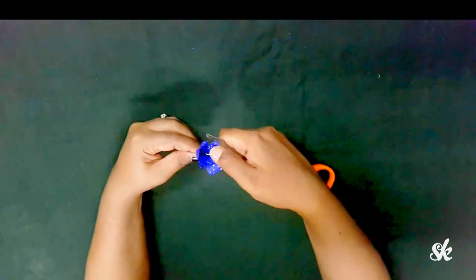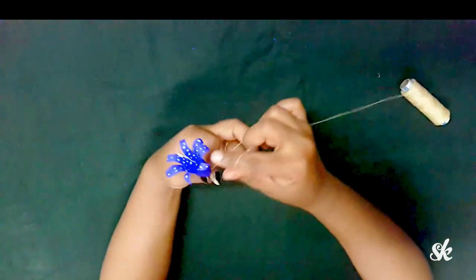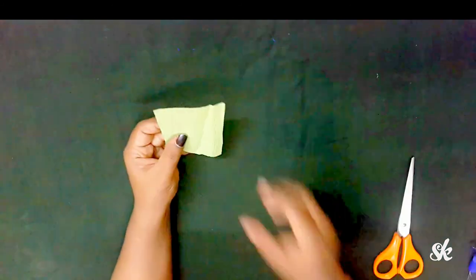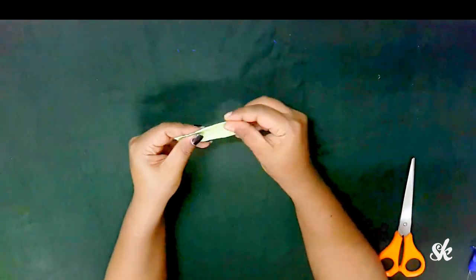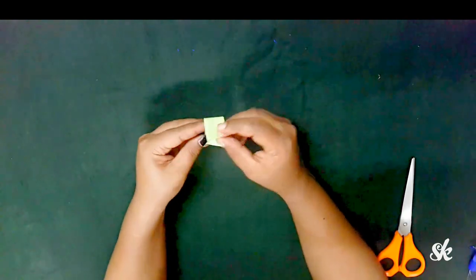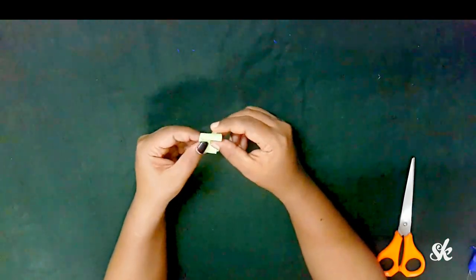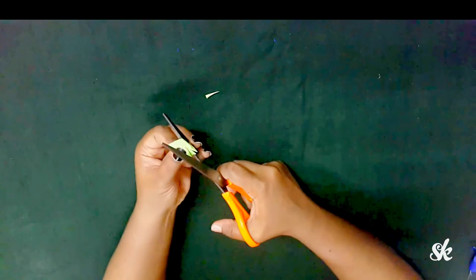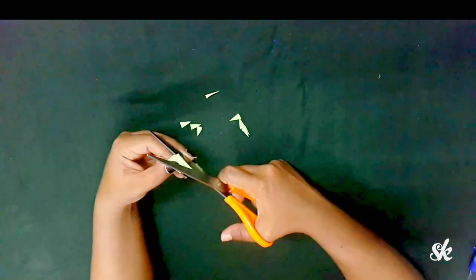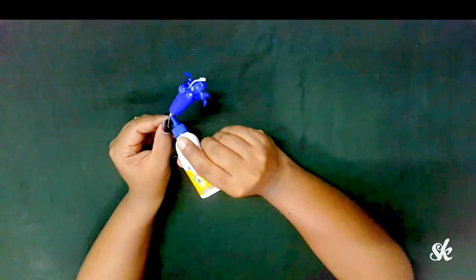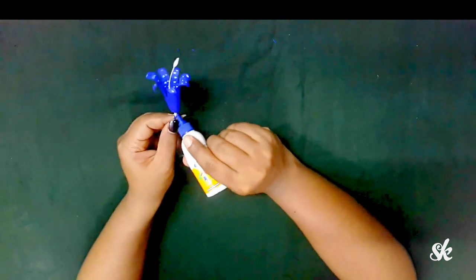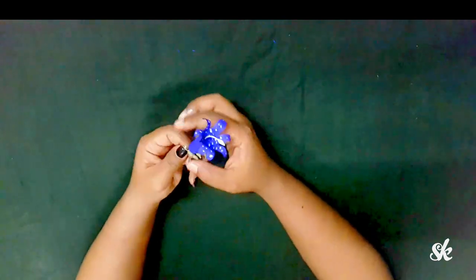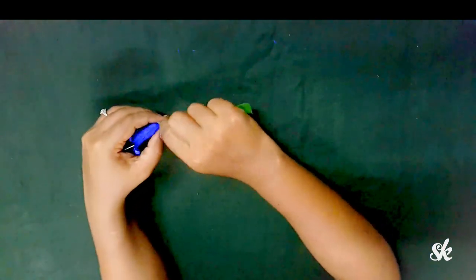For shaping the sepals, use green colored crepe paper, fold and cut it like this. Apply some glue at the flower base and stick out the sepals, then wrap up the flower stem with the green tape.